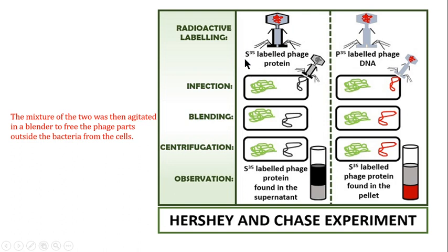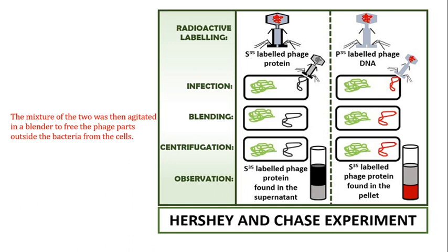Hershey and Chase labeled the protein with radioactive sulfur (S-35), because sulfur is only present in proteins — specifically in the amino acid cysteine — and is absent in DNA. For DNA labeling, they used radioactive phosphorus (P-32), because phosphorus is only present in DNA and not in protein. They then performed two sets of experiments.